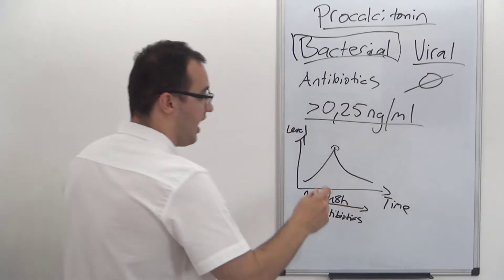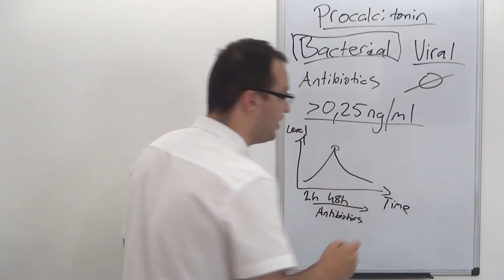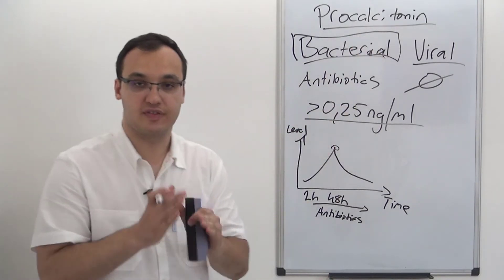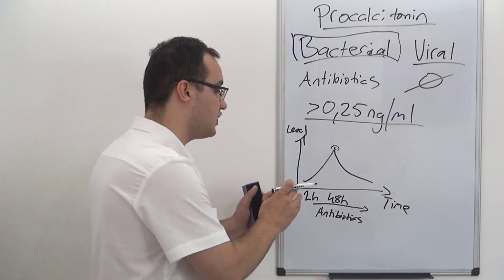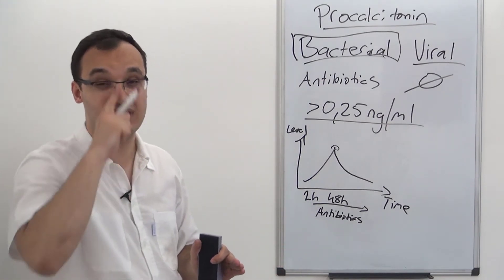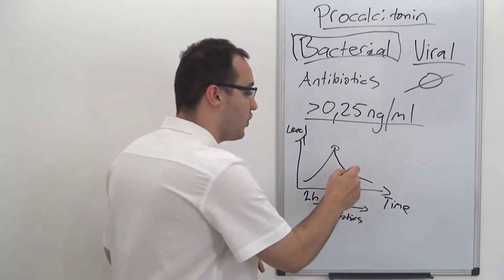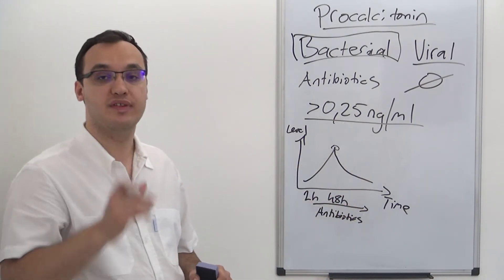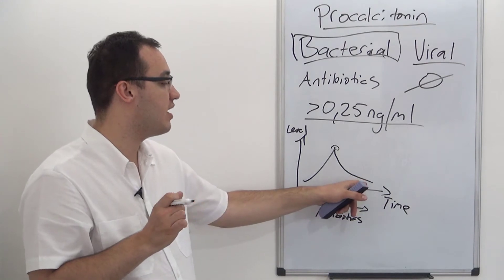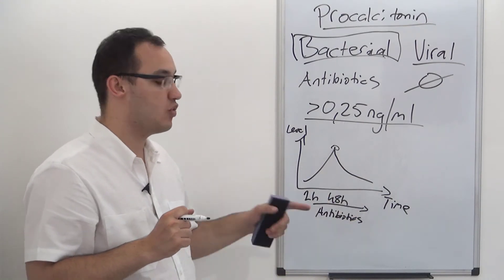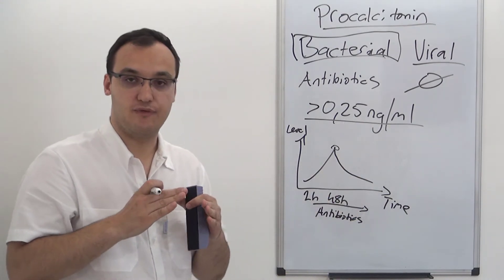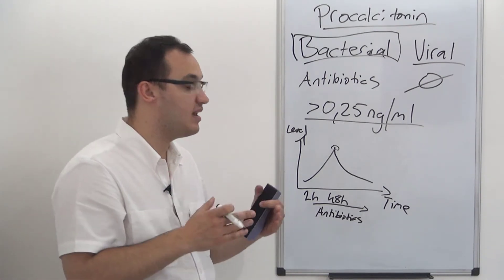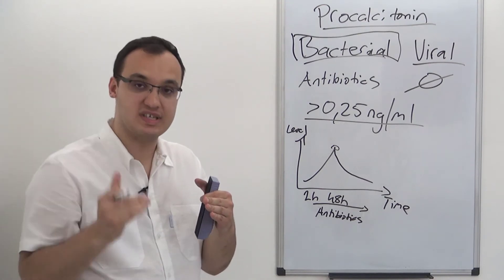Procalcitonin is not so important for the initial diagnosis, but it's very important for deciding when to stop antibiotic treatment. It has been shown that if you stop antibiotic treatment a little bit earlier, antibiotic resistance will decrease. So procalcitonin is very useful here for monitoring when treatment can be stopped.